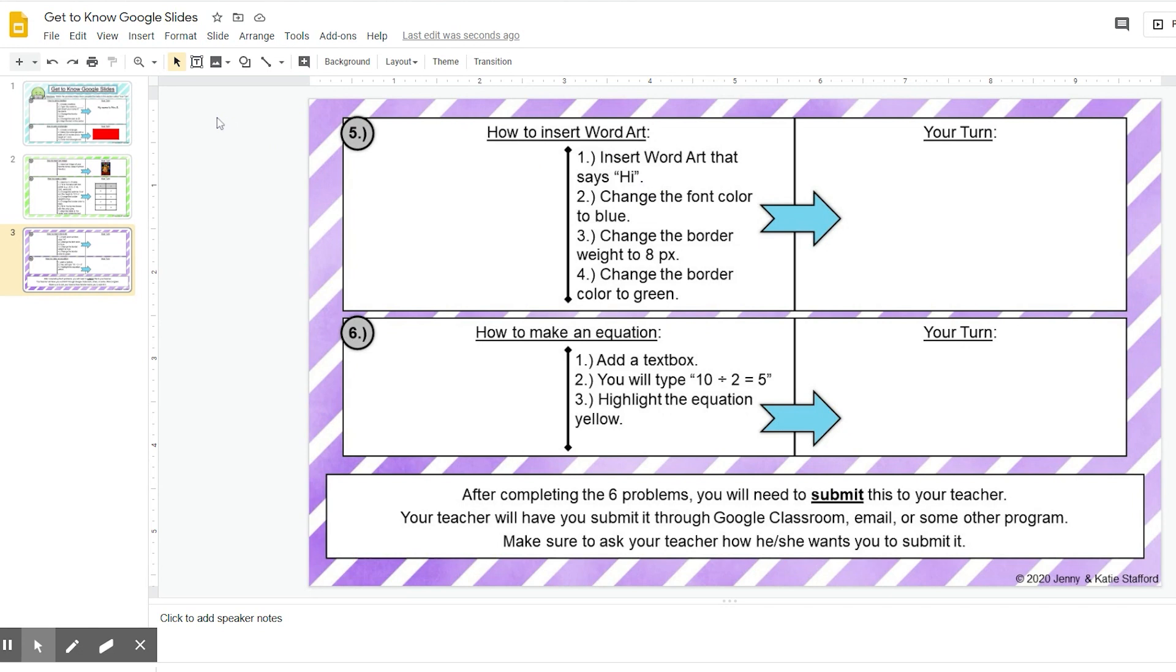I'm going to go over here to insert, then down to where it says word art. Now in this box, I'm going to type hi, and then hit enter. And bam, it creates a word art for me that says hi.